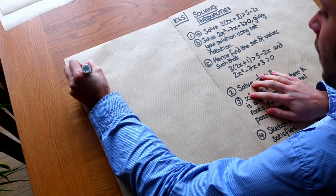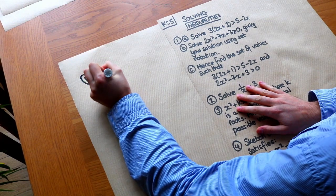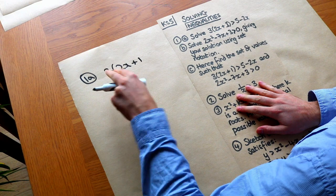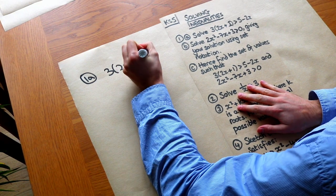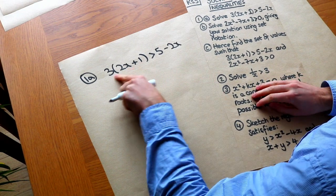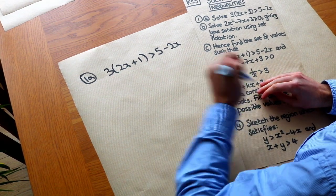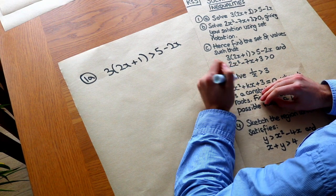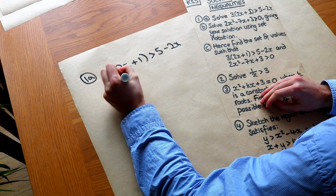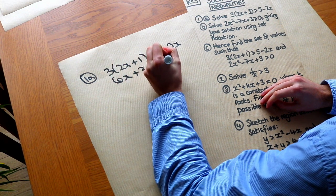Let's crack on with 1A. We want to solve this linear inequality - it's called linear because you've only got x terms and constant terms, no x squared terms. We just expand everything out and get everything on one side, just like solving an equation. So expanding: 3 times 2x is 6x, 3 times 1 is plus 3, it's greater than 5 minus 2x.